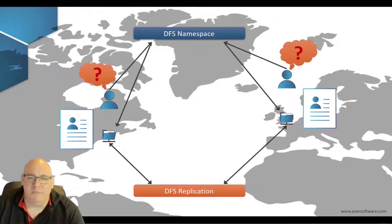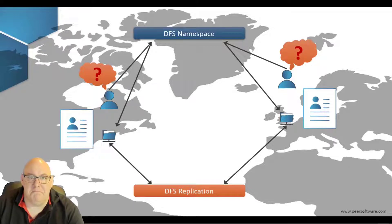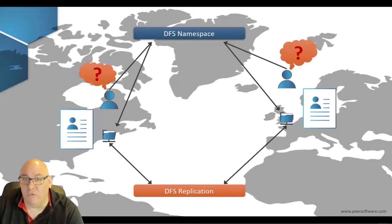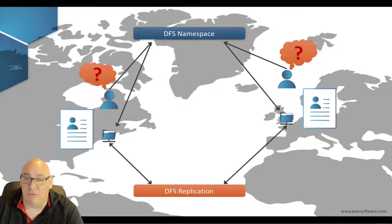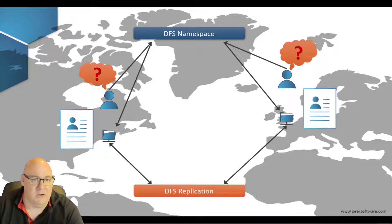And that's messy enough if two disparate teams of users are working on the same set of data. But what if you also had folder targets in Munich, Washington, Paris, and California? That's now not just messy but a potential disaster for some poor administrator who would have to resolve all of the conflicting files.